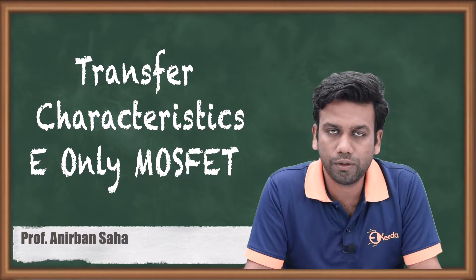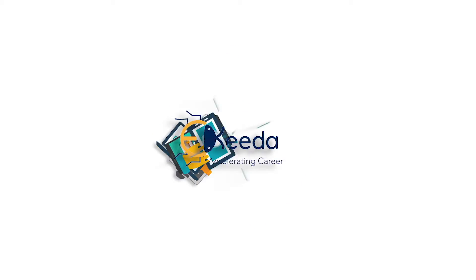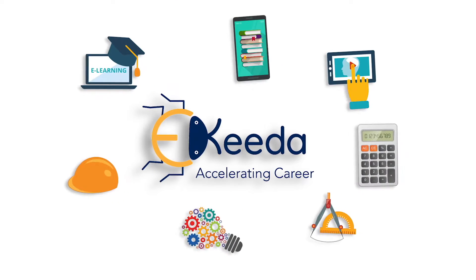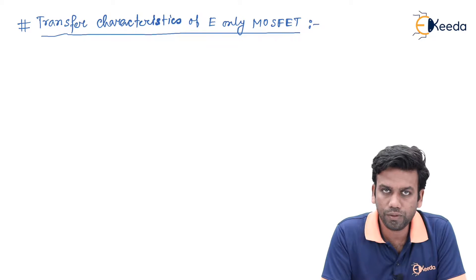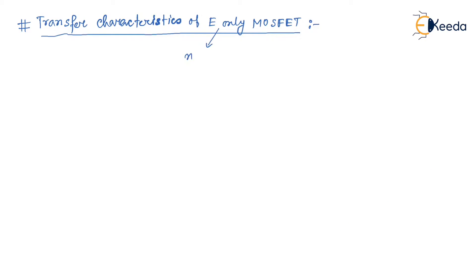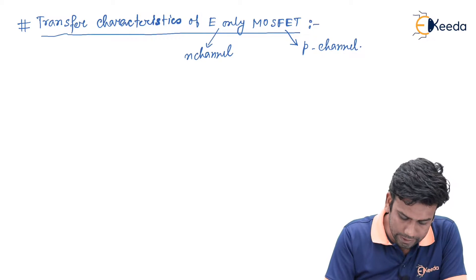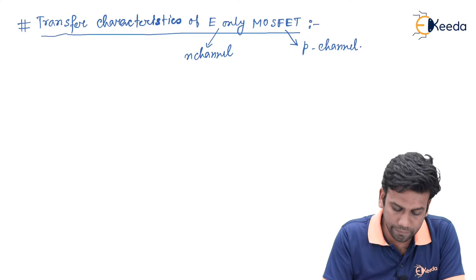Hello friends. In this video we are going to discuss about the transfer characteristics of MOSFET. As we know, the E-only MOSFET has two types: N-channel and P-channel, and they will be different in the transfer characteristic format.